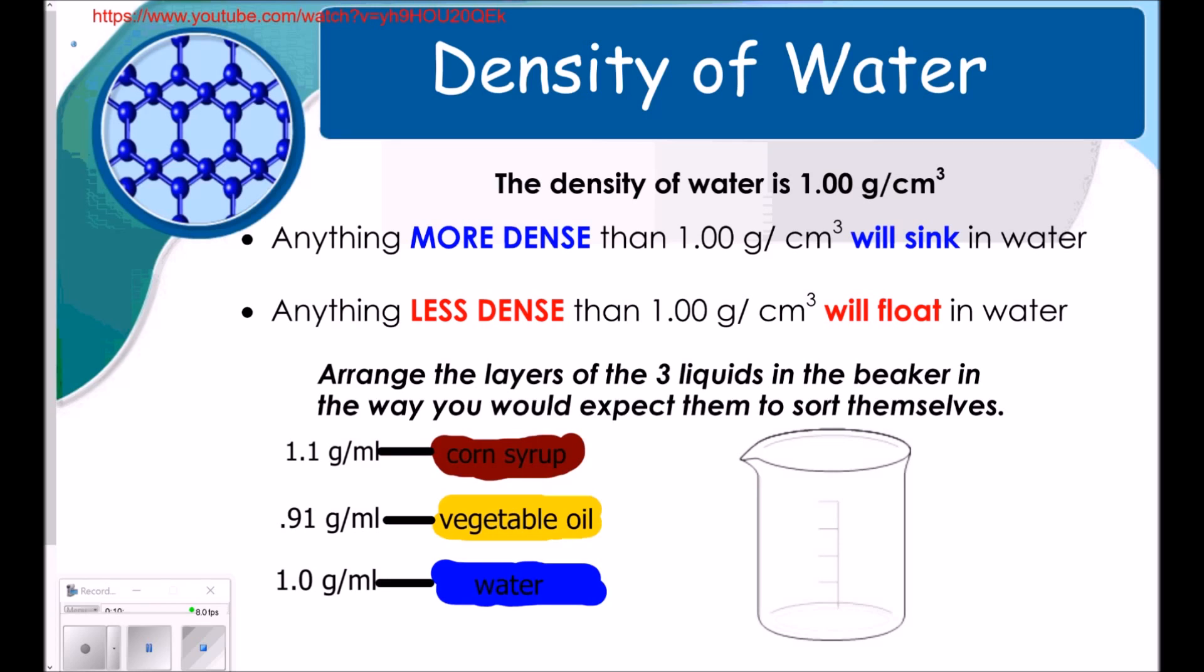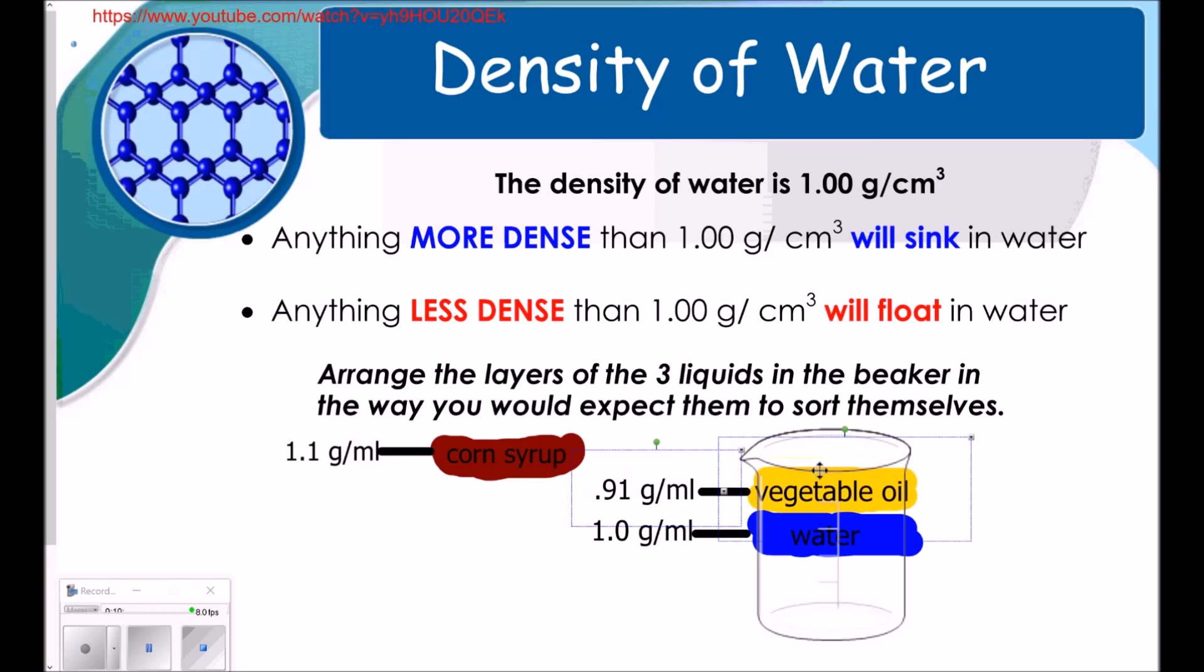So, in my little picture here, it says, arrange the layers of the three liquids in the beaker in a way you would expect them to sort themselves. So, we could pour these three things in the beaker and shake them up. And they would separate by their density. So, I'm going to go ahead and put water in here. So, water is 1 gram per milliliter or per cubic centimeter. Same thing. Vegetable oil would float on top because it's less dense. And the corn syrup would sink to the bottom because it's more dense. This is how they would arrange themselves by density.